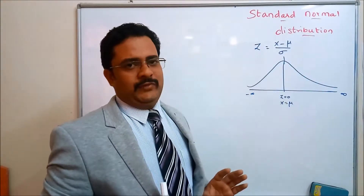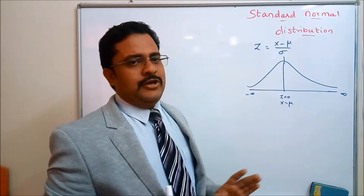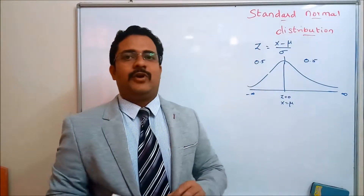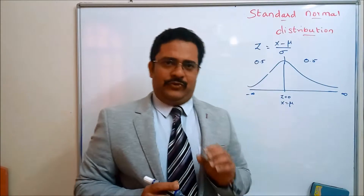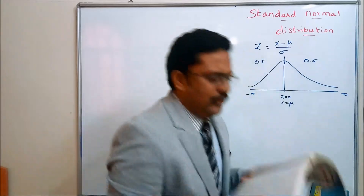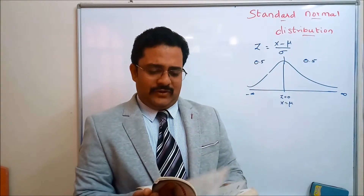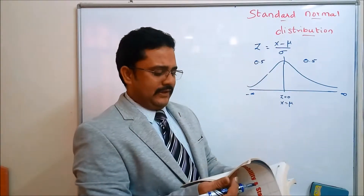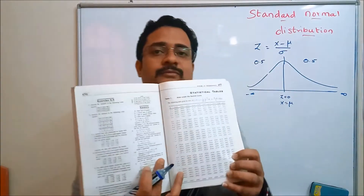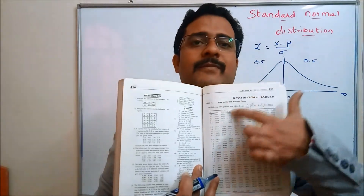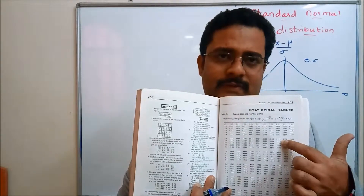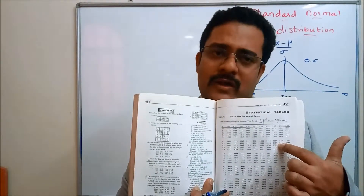The normal curve is symmetric — it is of a bell shape. This side it will be 0.5 and this side it will be 0.5. This normal distribution we are going to calculate by using the table. You will be given a table which consists of the areas under the standard normal distribution. From this table we have to find the area under the normal distribution, or the required area.